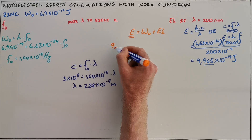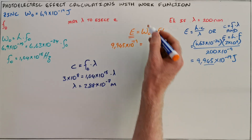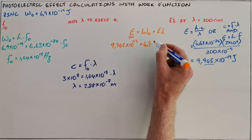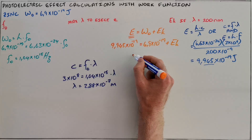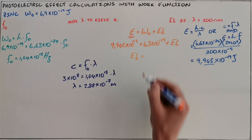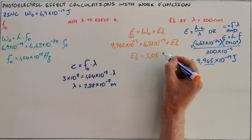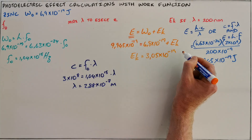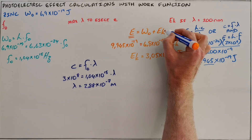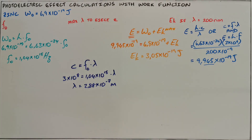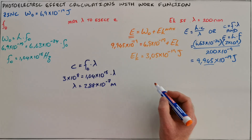Now going back to the original formula: the energy of the photon, 9.945×10⁻¹⁹ joules, equals the work function of the metal, 6.9×10⁻¹⁹, plus the kinetic energy. Solving for kinetic energy gives 3.045×10⁻¹⁹, which we round to 3.05×10⁻¹⁹ joules. This is the energy of the ejected photoelectron, also referred to as the maximum kinetic energy.